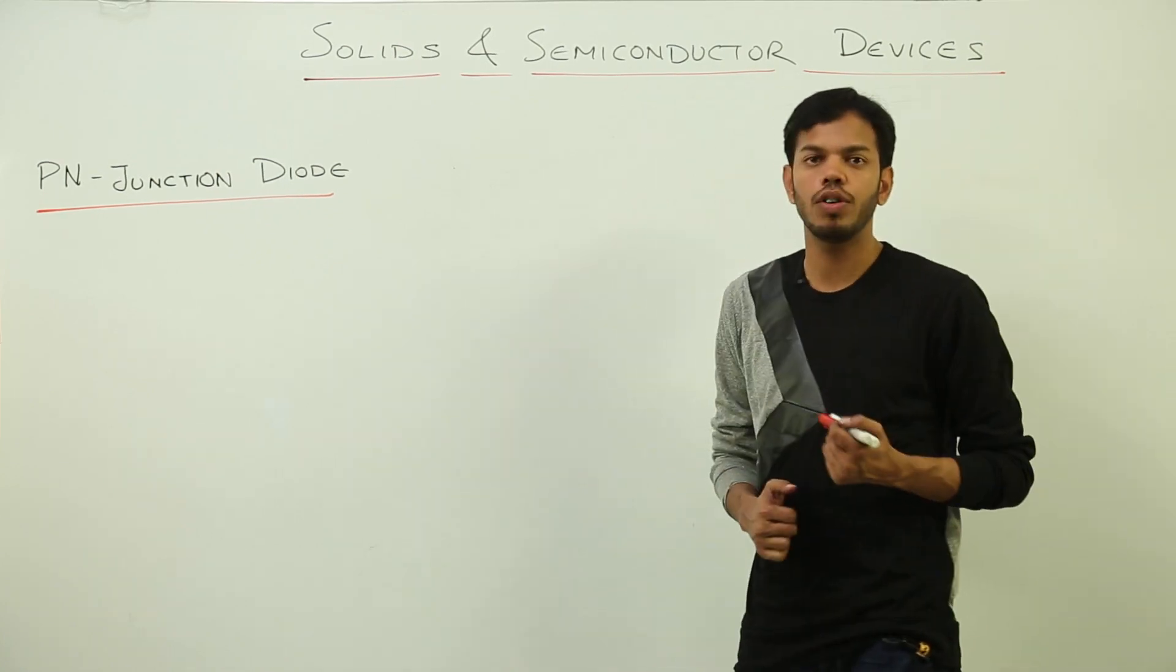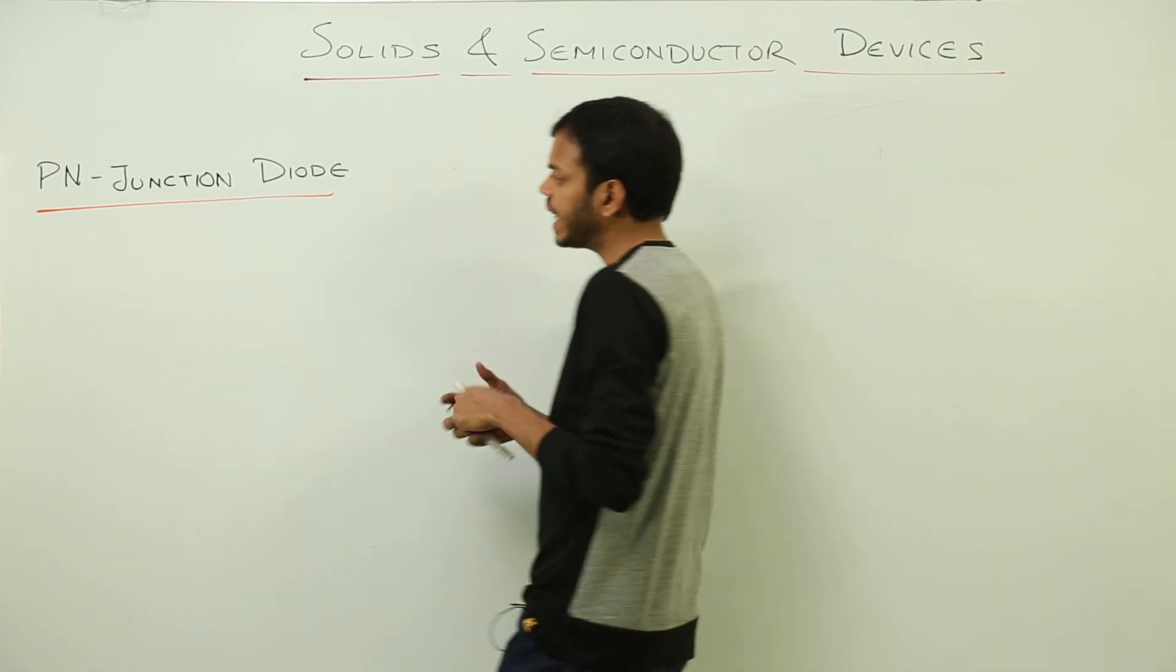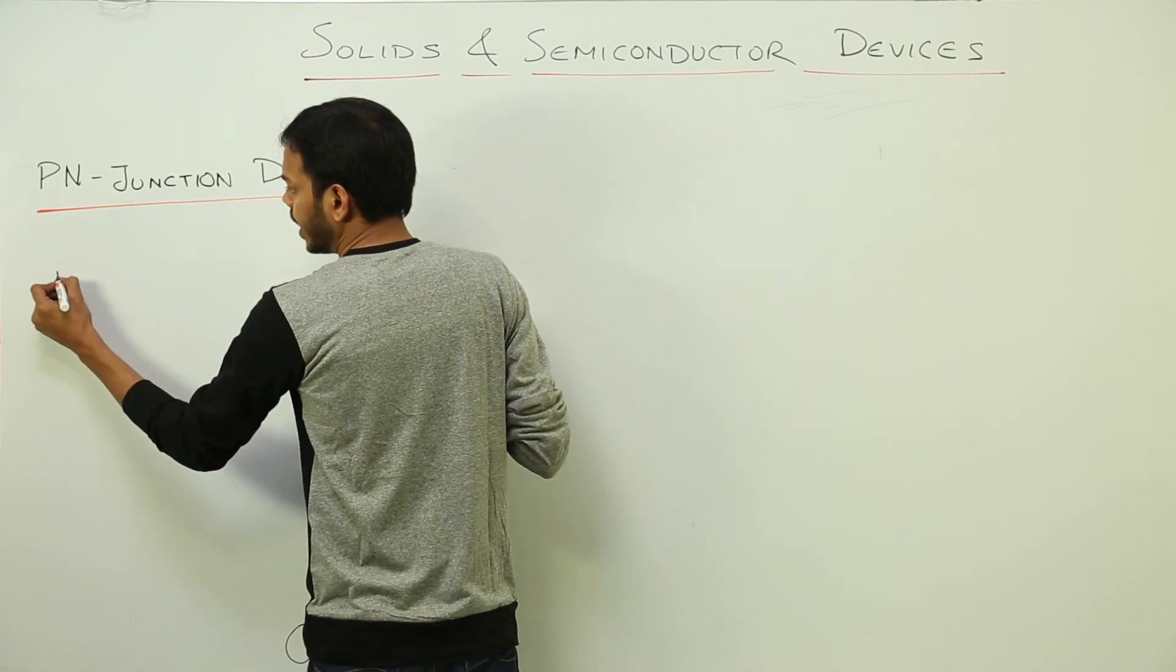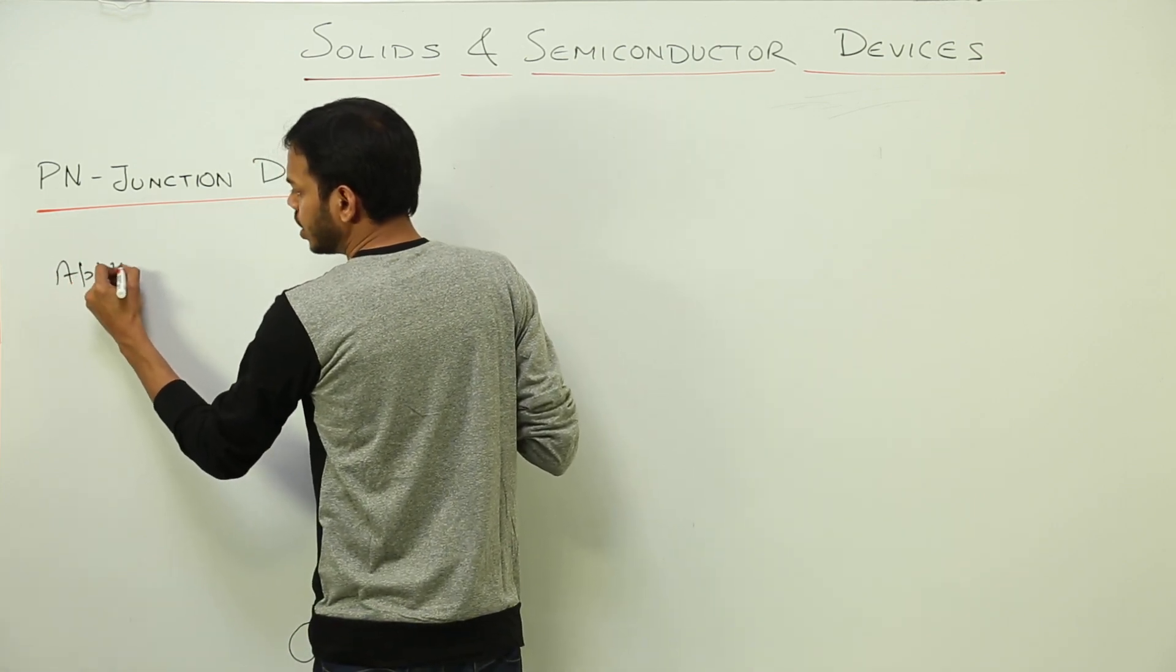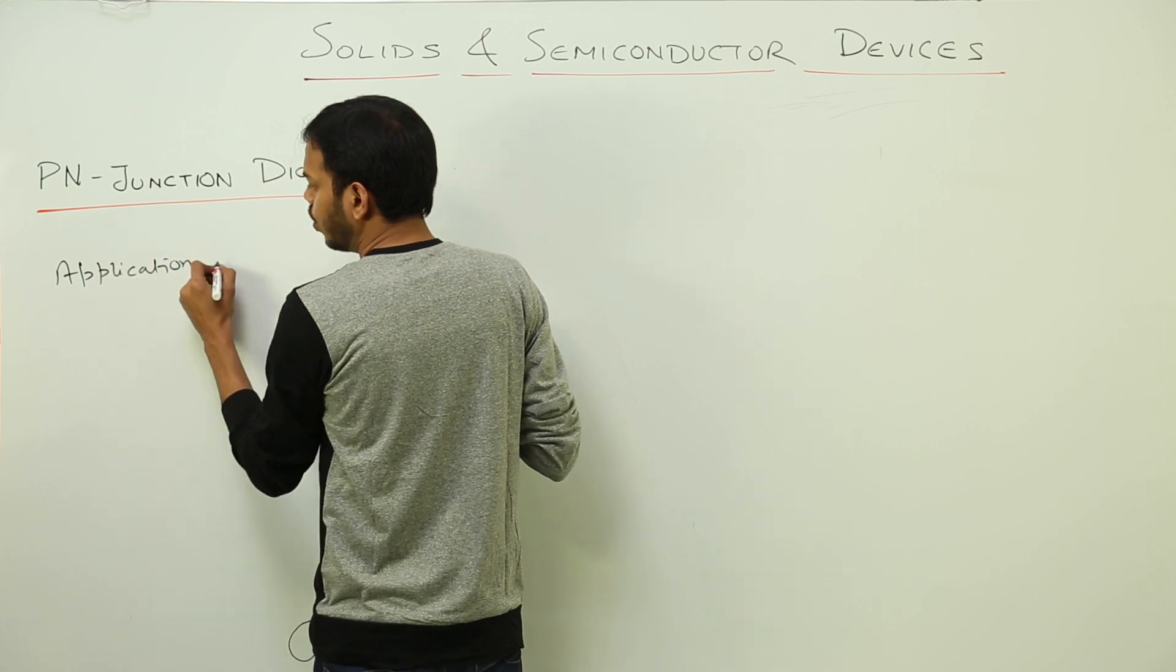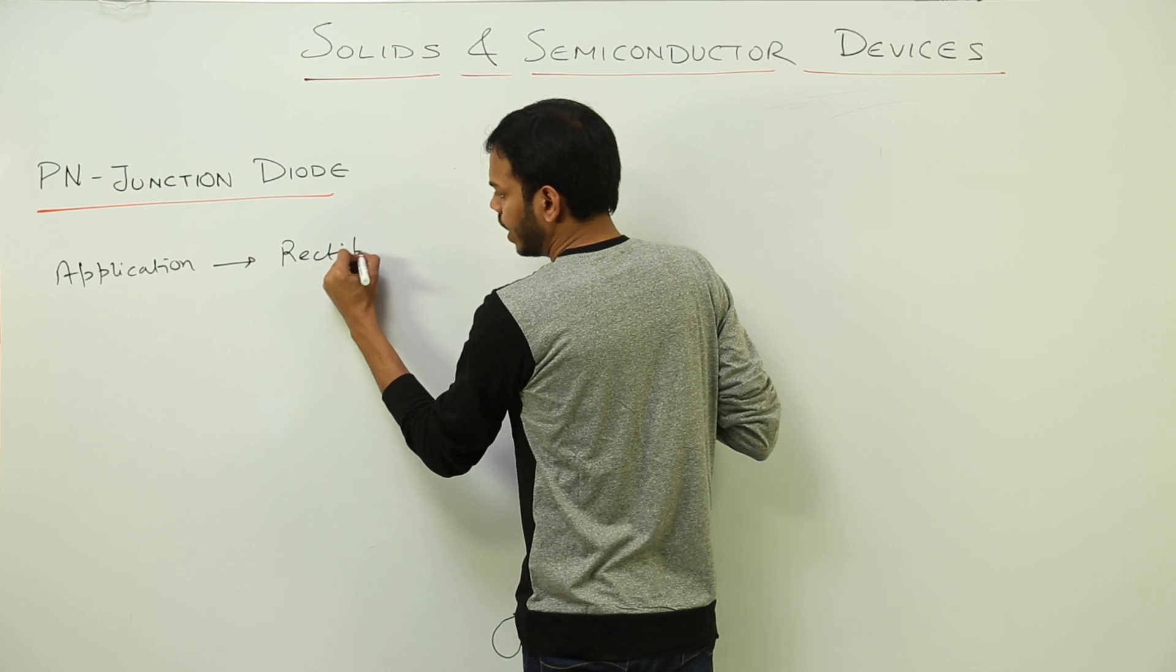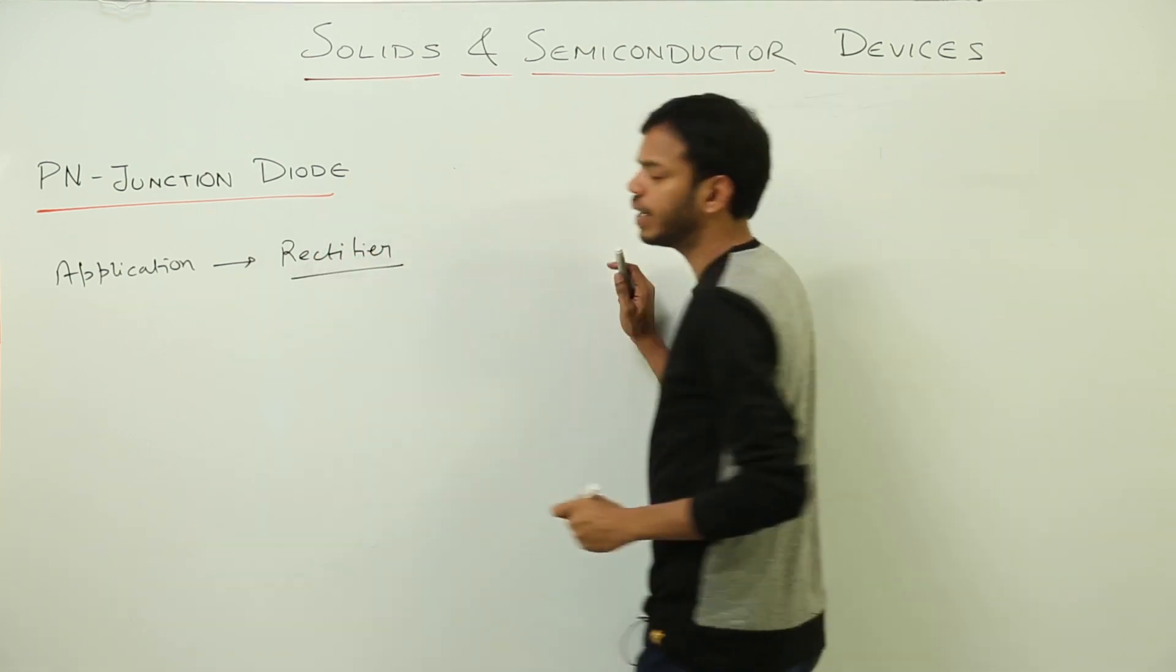Now PN-junction diode is utilized in a lot of ways. The basic application is in the construction of rectifier. So right now we are doing applications of PN-junction diode, and the basic one which we have to study is rectifier. Now what is rectifier? Rectifier is a